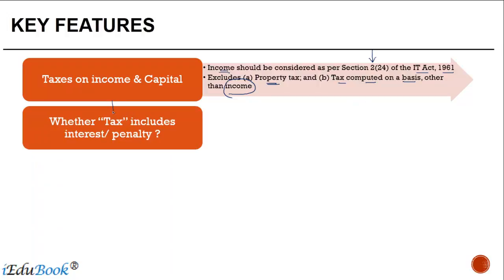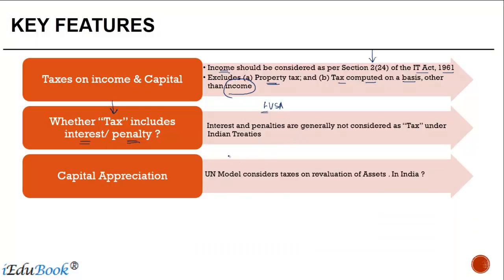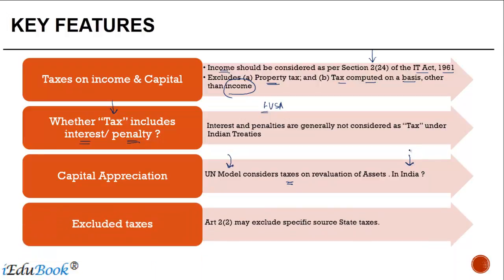Now, whether tax includes interest or penalty — the answer is generally no. As we discussed in the India-US treaty, it excludes any penalties and interest paid for default in payment of taxes. Regarding capital appreciation, while the UN Model considers it as taxes, in India we generally do not consider it as a tax. Also, Article 2.2 may specify that it shall exclude certain categories of taxes, meaning if the article specifies that a particular tax in India is not going to be considered as a tax, you have to exclude it.